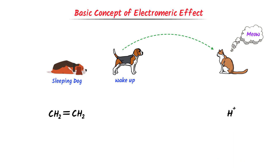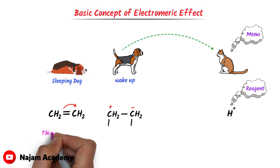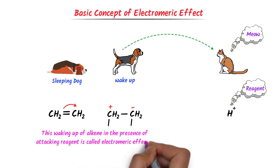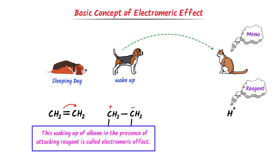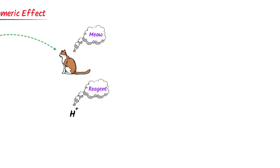Similarly, consider this alkene. If I place an attacking reagent near this alkene, the alkene will wake up and change its structure, just like the dog. On the other hand, if there is no attacking reagent, this alkene will enjoy its sleeping period. This waking up of the alkene in the presence of an attacking reagent is known as the electromeric effect.